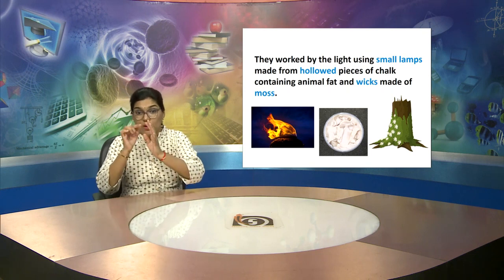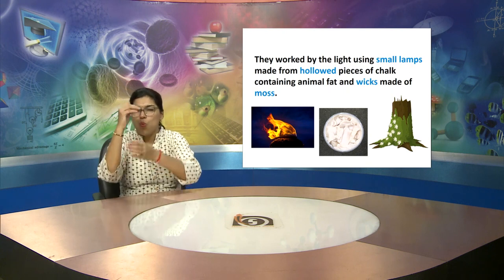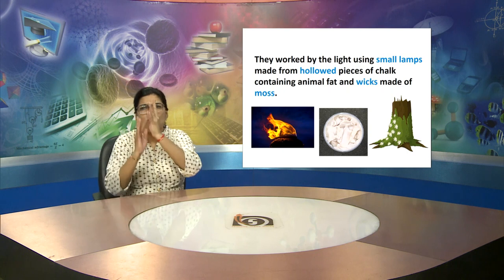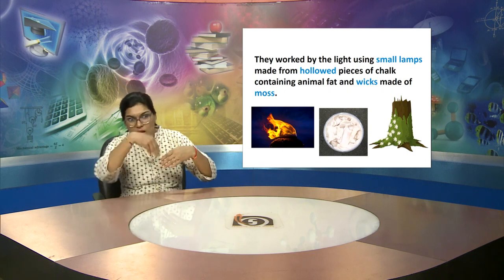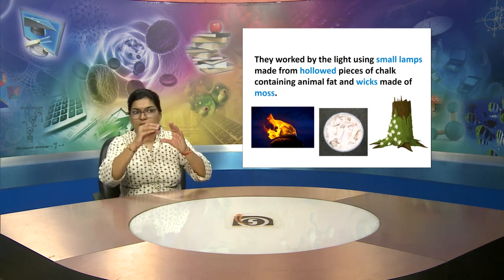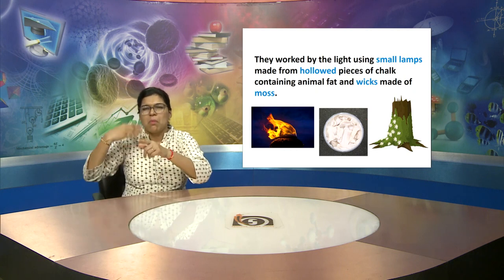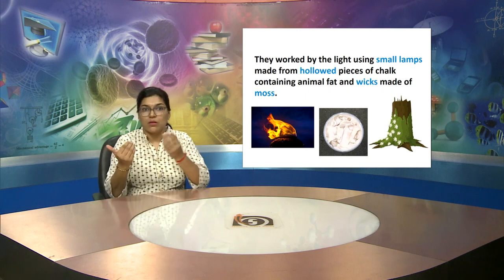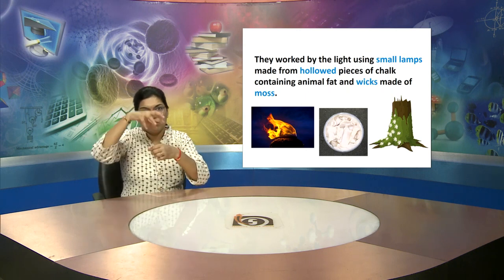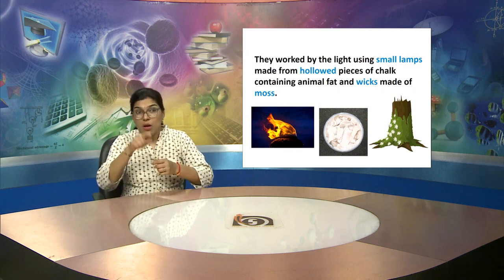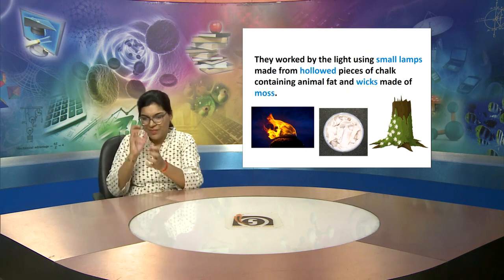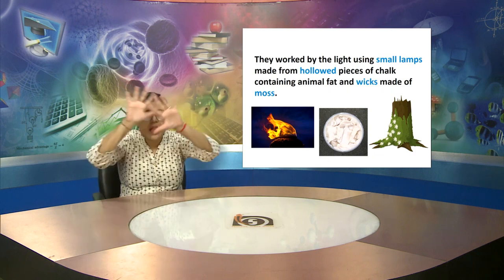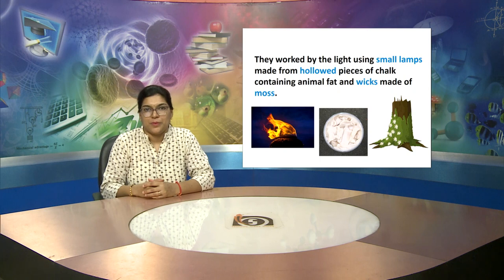They worked by light because in the mines it was dark. They had the idea of getting light in the mines by using small lamps made from hollowed pieces of chalk containing animal fat and wicks made of moss. The animal fat was used for lighting the lamp. This was one creative solution, and at that time they used different ways for lighting in the mines so they could work in light.